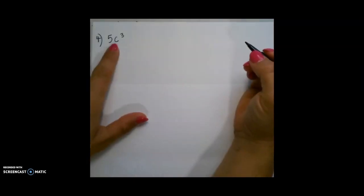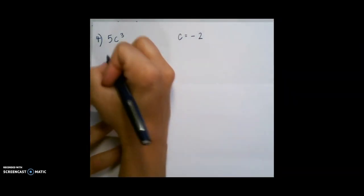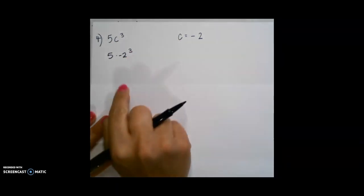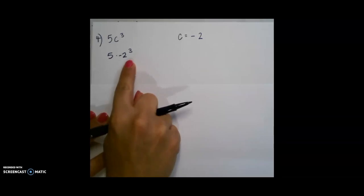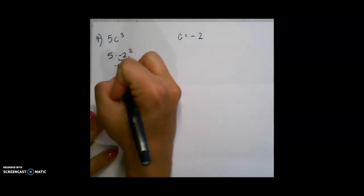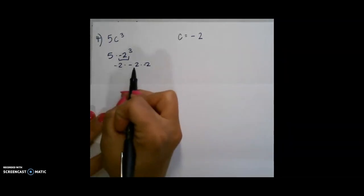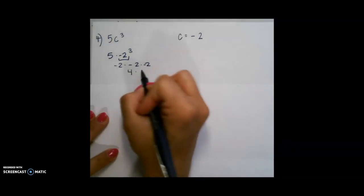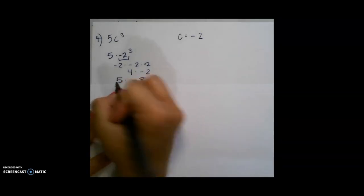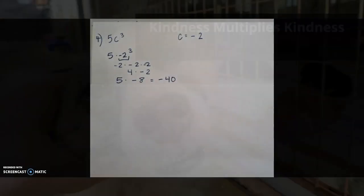And for our last example, we'll have 5c to the third power if c equals negative 2. So remember, this means multiplication. But we have to remember to do the exponents first. I see a lot of mistakes where people will multiply before they take care of their exponent. So I want to do negative 2 to the third power. Negative 2 times negative 2 is positive 4, times negative 2 is negative 8. Now we can multiply negative 8 times 5, which is going to give me negative 40 as my final answer. We'll see you next time. Bye.